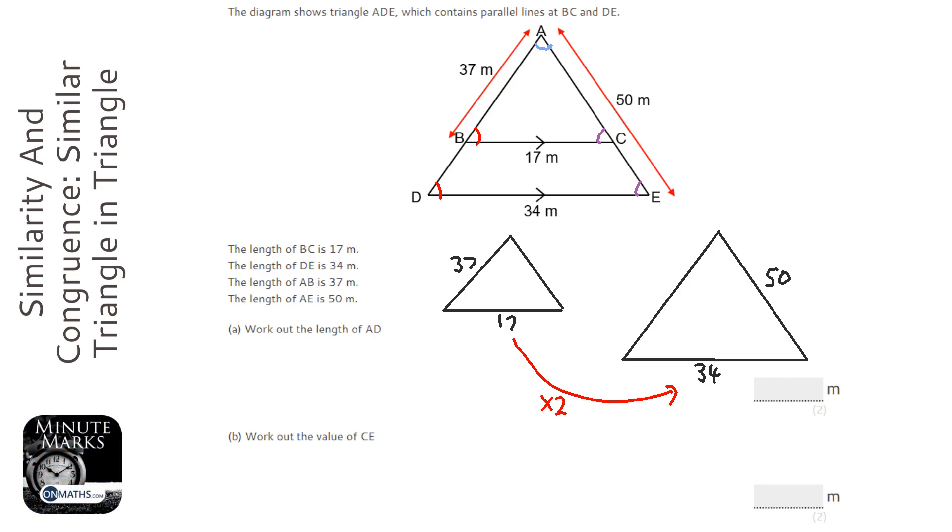So if I'm timesing that side by 2 and I'm looking for length AD. Now AD is this one here. How do I get from 37 to AD? And remember, it's the corresponding side. So it would be the left-hand side will go to the left-hand side. So I times that by 2. So it would be 37 times 2, which is going to be 74. The amount will be 74.